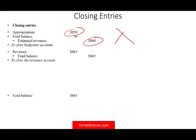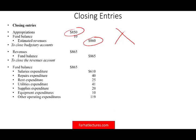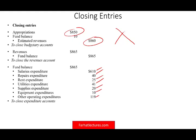Then close all the expenditures: debit fund balance for the total, and credit each expenditure account — salaries, repairs, rent, utilities, supplies, equipment, and other expenditures. What ended up happening is the county earned revenues of $865M and incurred expenditures of $865M. Therefore they did not have any increase in the fund balance. Initially they expected a positive $10M, but they had more expenditure than expected, resulting in $865M versus $865M — no net change.